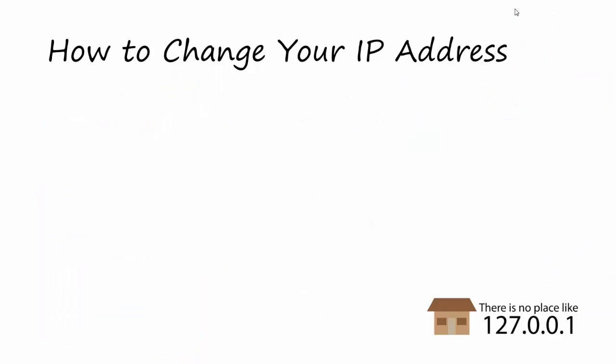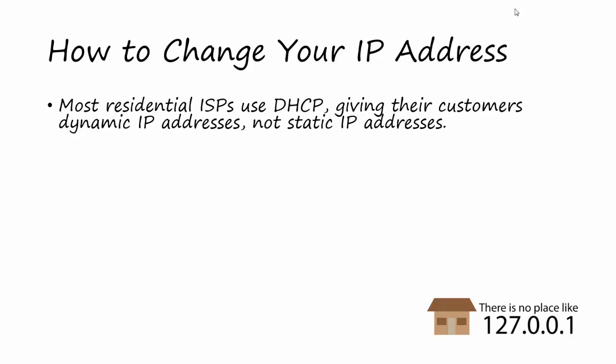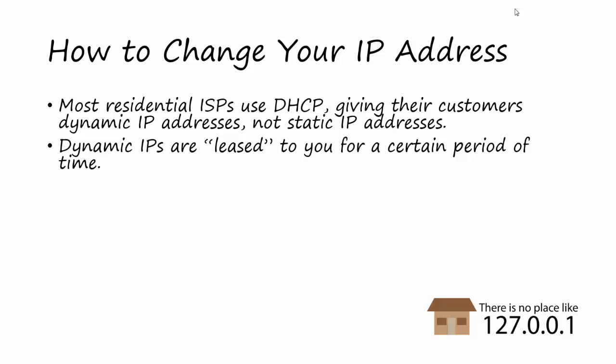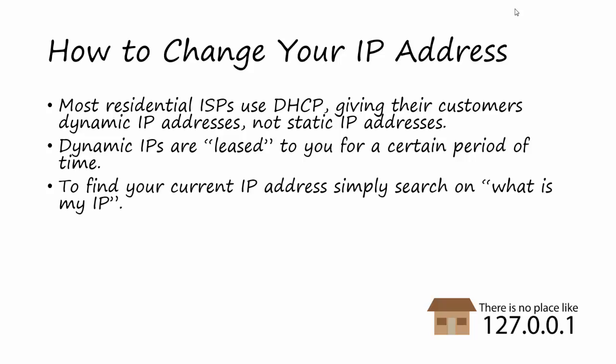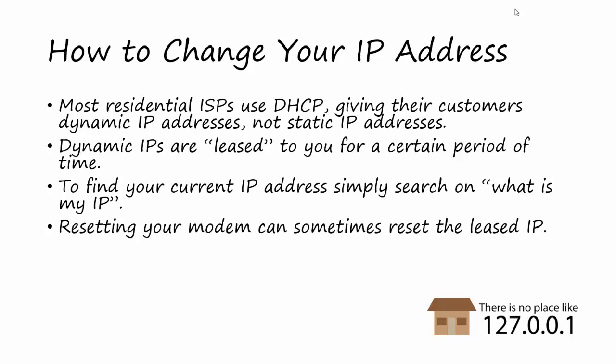Once you've got a proxy in place, you want to change the original IP address you're connecting from, just in case anybody already resolved it before you had the proxy and could attack it directly. Here's how to change your IP address. Most residential ISPs use something called DHCP, which means they give their customers dynamic IP addresses, not static IP addresses. A dynamic IP address is one that will change dynamically and periodically — it's leased to you for a certain period of time, and even if you do nothing, it will probably change every once in a while. To find your current IP address, simply go to Google, Yahoo, Bing, or whatever your favorite search engine is, and search 'what is my IP' — it will return your IP address.